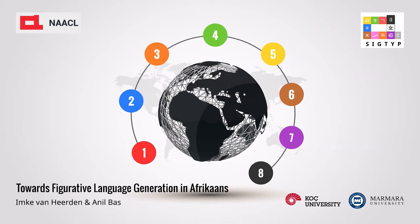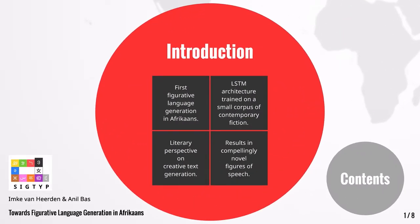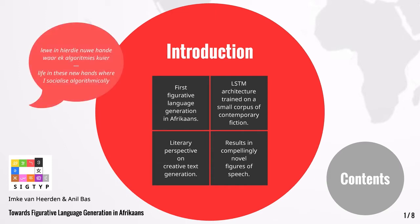Hello, I'm Imke van Hierden and today I will be talking about figurative language generation in Afrikaans. We are presenting at the SIG-Type workshop at the 2021 conference of the North American chapter of ACL. We present an LSTM-based approach to figurative language generation, which we believe is an important step towards creative text generation in Afrikaans. Due to scarcity of resources, we train the proposed network on a single literary novel. The model generates phrases that contain original figures of speech, like the example on the screen.